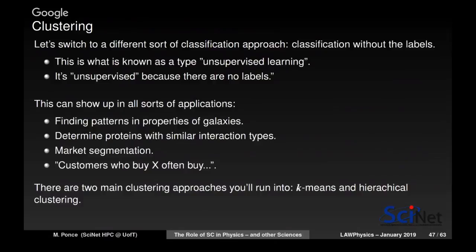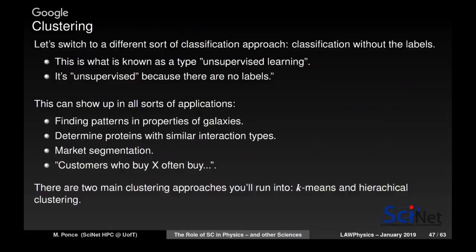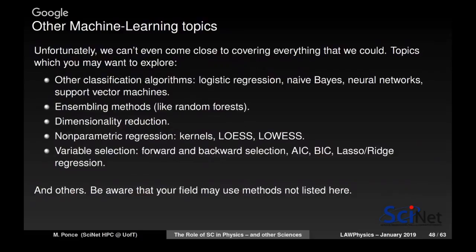Clustering is a type of unsupervised learning where you try to group things without knowing the groups in advance. Applications include finding patterns in galaxy properties, determining proteins with similar interactions, customer microsegmentation, and recommendation systems like Netflix suggesting movies. Other machine learning topics include ensemble and sampling methods like random forest — which you can think of as an effective field theory approach — dimensionality reduction such as PCA (principal component analysis), non-parametric regression, and variable selection methods.